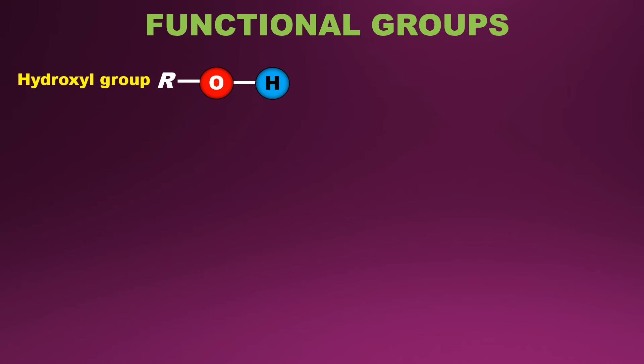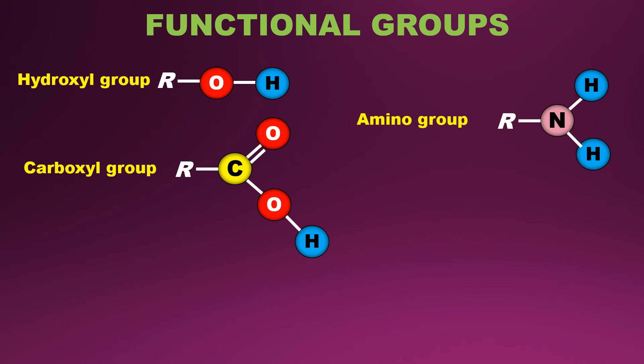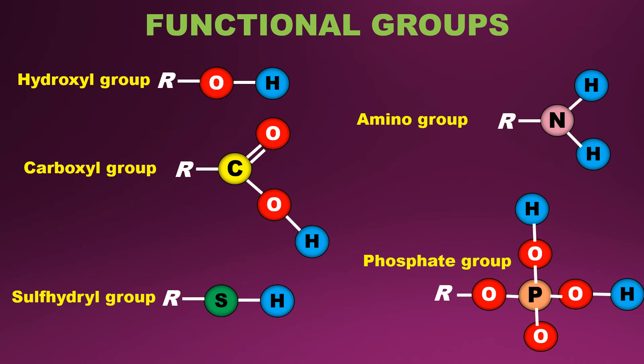Similarly, there are different functional groups like carboxyl group, amino group, sulfhydryl group, phosphate group. And in which R denotes carbon skeleton or backbone. Here you can see oxygen should have two bonds to complete its chain. Carbon should have four bonds to complete its chain. Sulphur should have two bonds, nitrogen should have three bonds, and phosphorus should have four bonds to complete its chain.